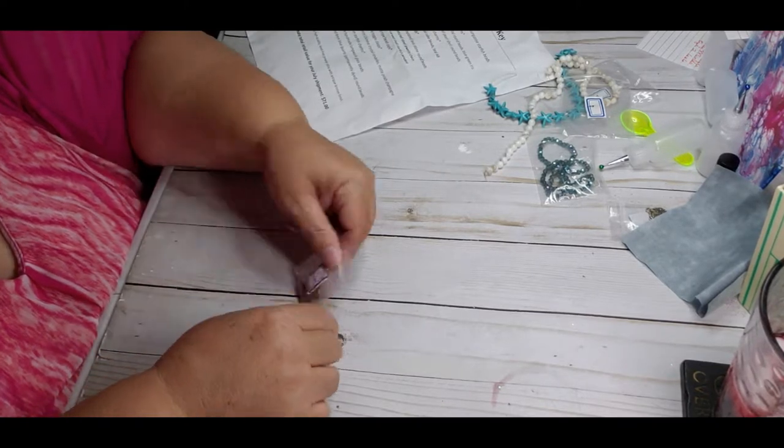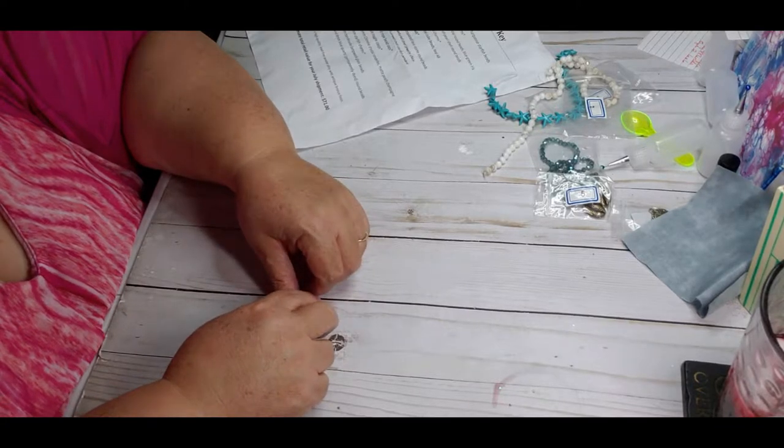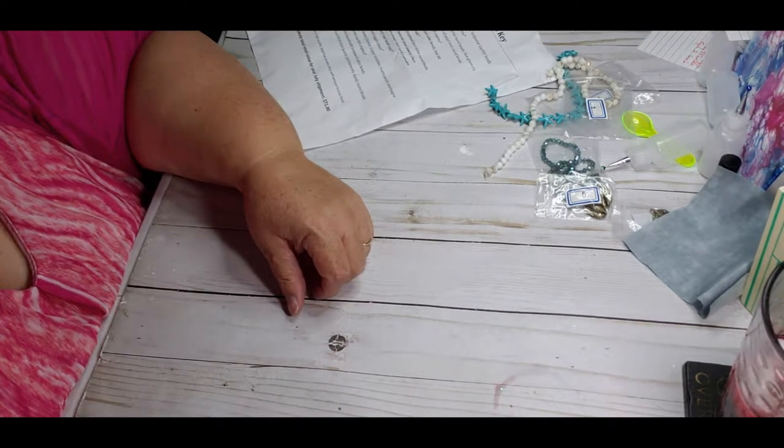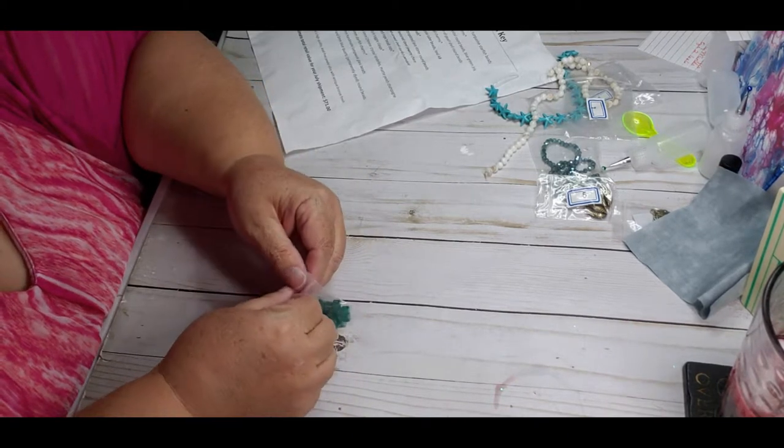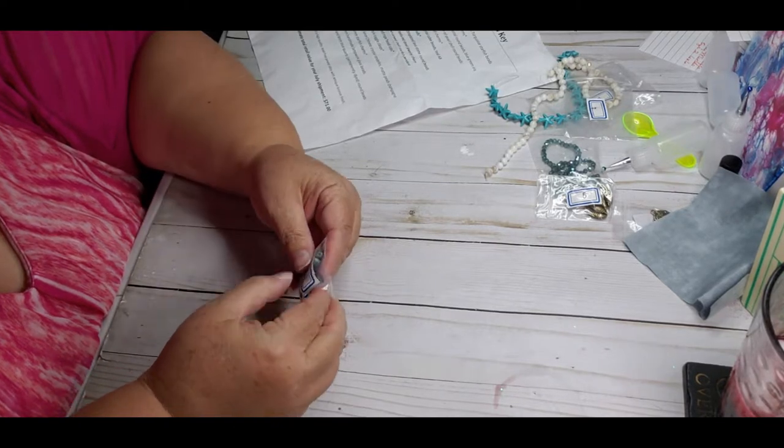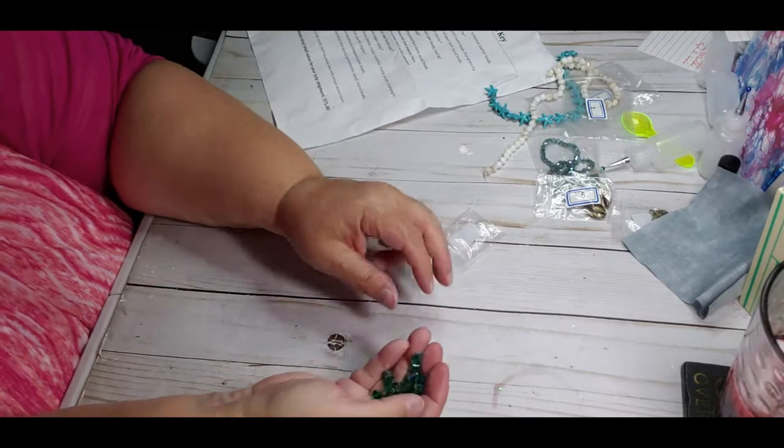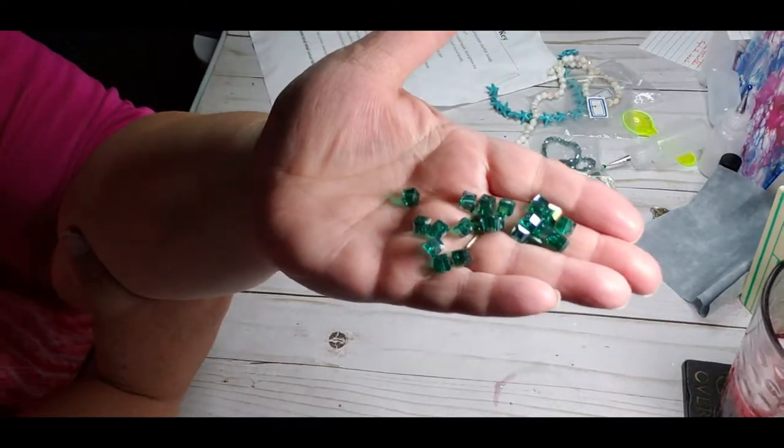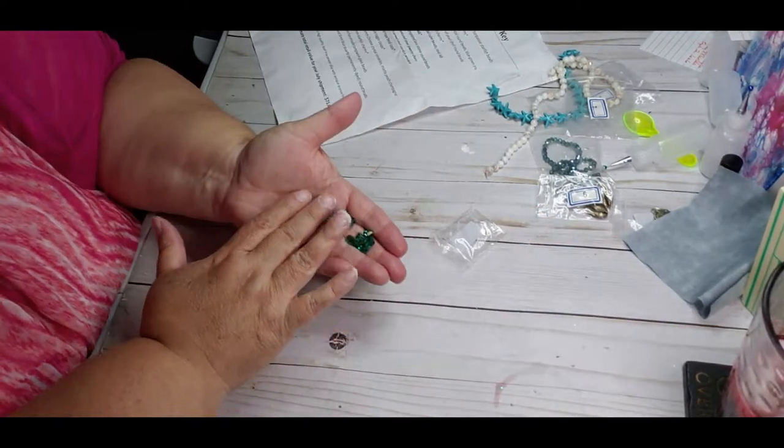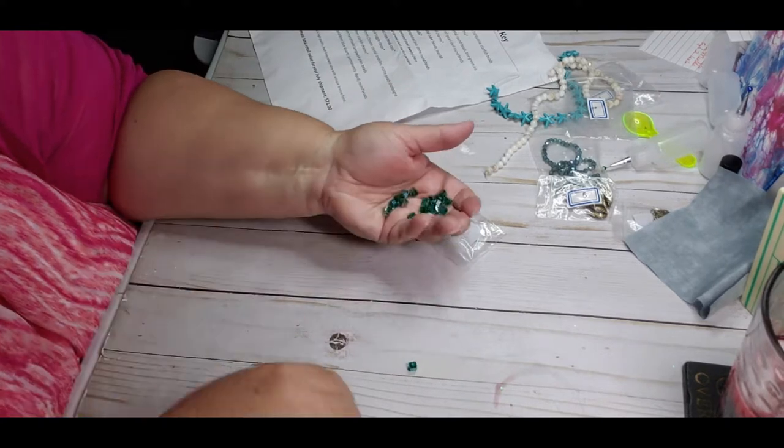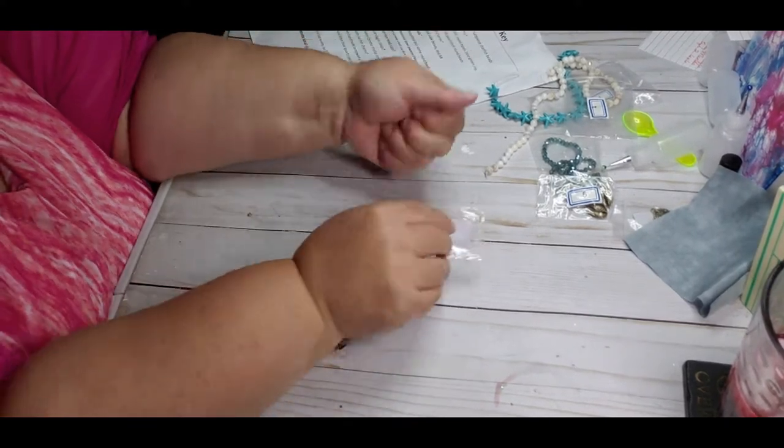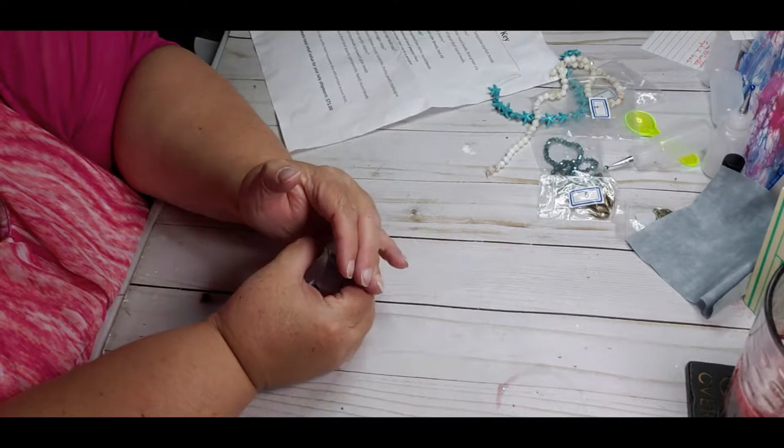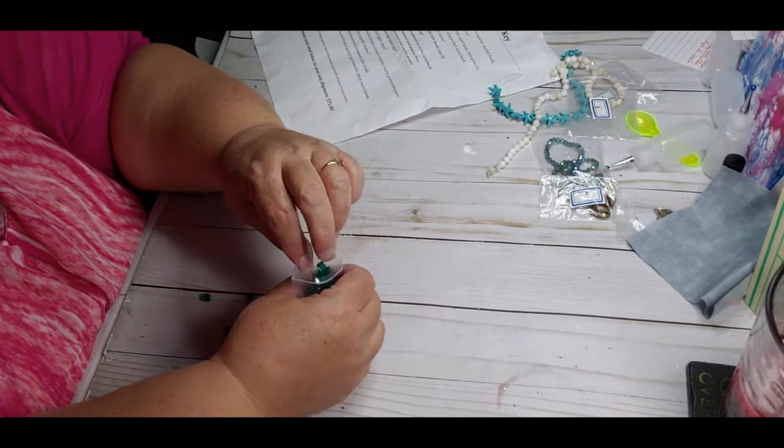Number six - 20 piece, six millimeter Chinese crystal cube beads, teal AB finish. So that would be this. Number six, 20 piece, six millimeter cube beads. AB finish. That's pretty, I like the color for sure. Pretty. Trying to think of ideas. I don't want to get it in there, it's going to be all over my table and I'm going to lose everything.